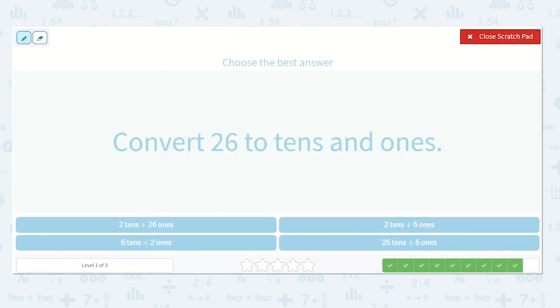Next, they would like us to convert twenty-six to tens and ones. How many tens are in our number? Yes, two. Two tens.